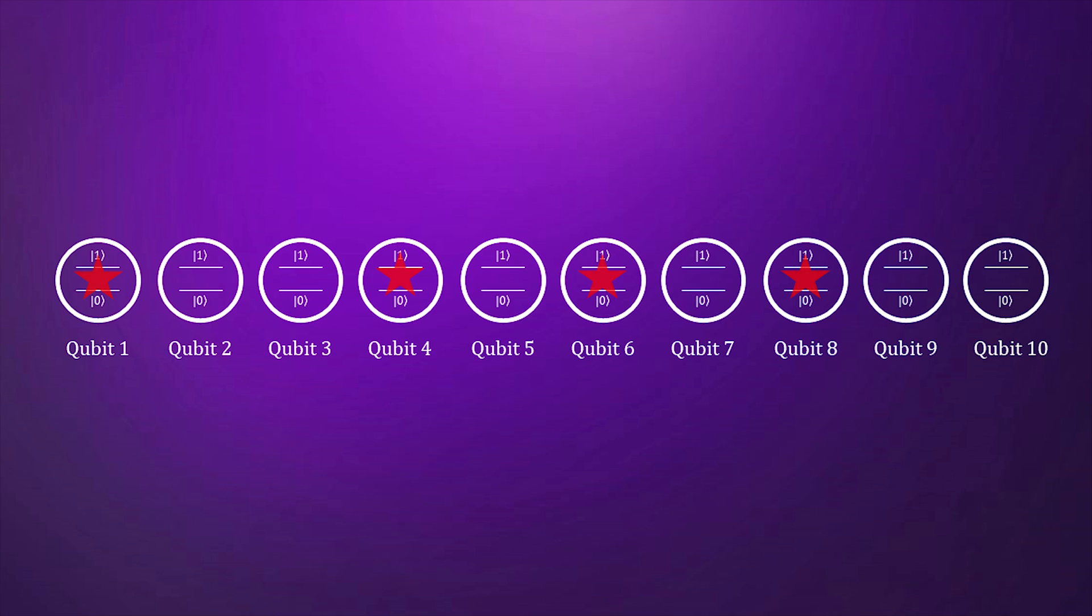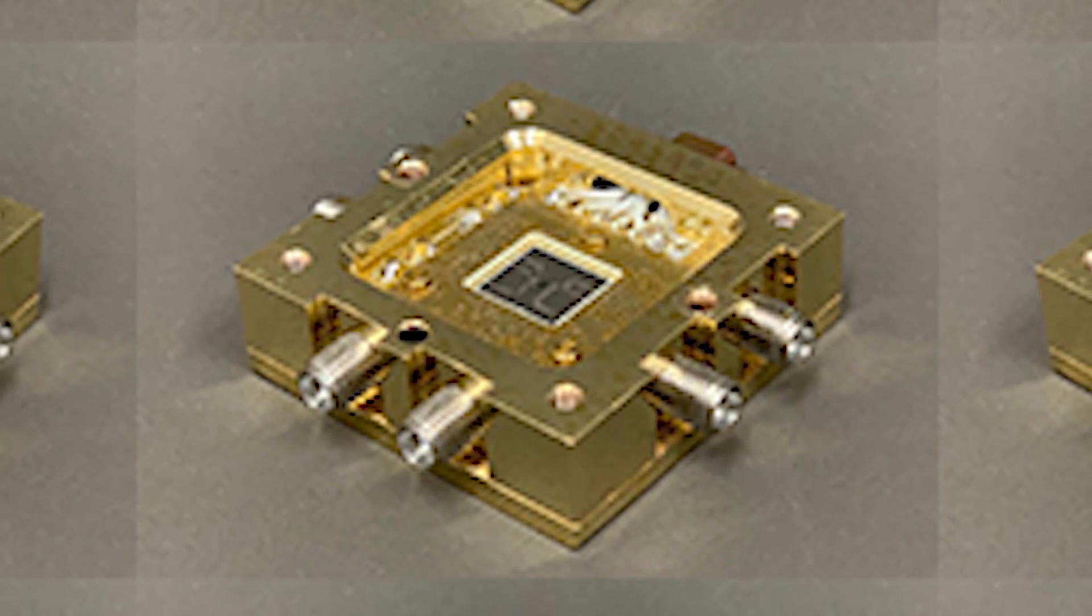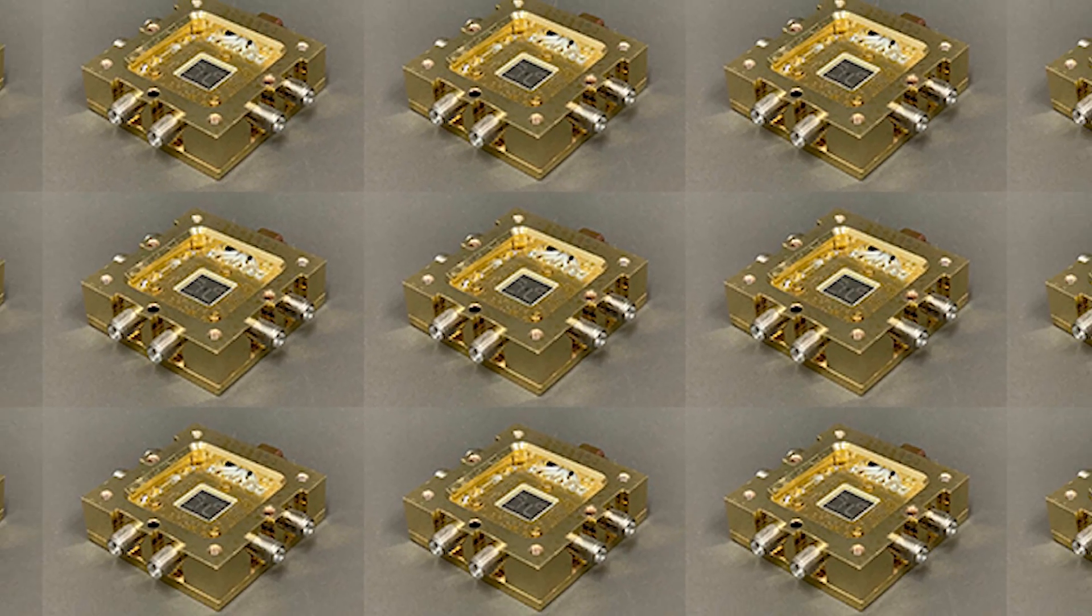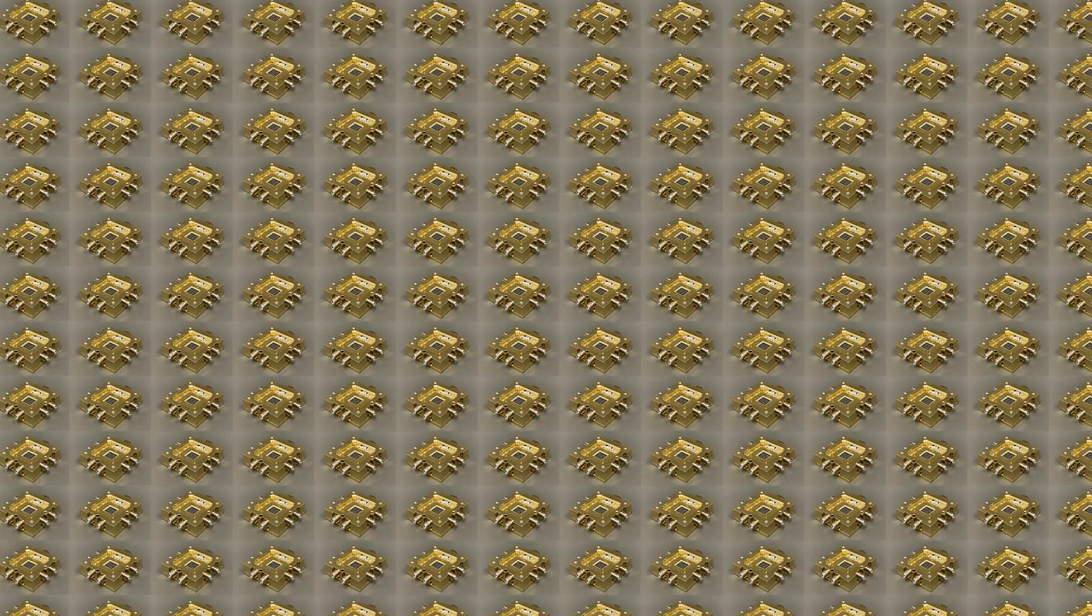But the problem is that you need a ton more qubits. And here I just described the memory, but when you need to process your information to make a calculation on this quantum error correction code, you need even more qubits.